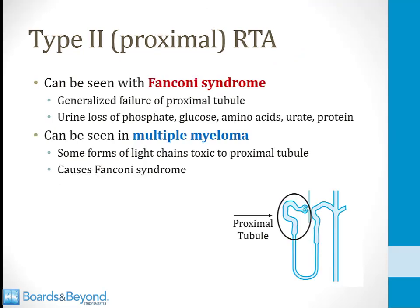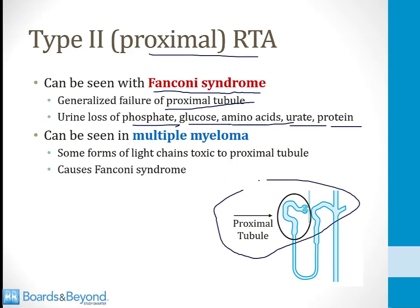There are two high-yield associations with proximal RTAs for your Step 1 exam. The first is that a proximal RTA occurs as a component of Fanconi syndrome. Fanconi syndrome is a generalized failure of the proximal tubule, and people with Fanconi syndrome lose in the urine all the things that should be reabsorbed in the proximal tubule — this includes phosphate, glucose, amino acids, urate, and protein. In addition, people with Fanconi syndrome develop a proximal RTA because their proximal tubule isn't working. Fanconi syndrome can be seen as an inherited disorder in children and can also occur secondary to a number of drugs.